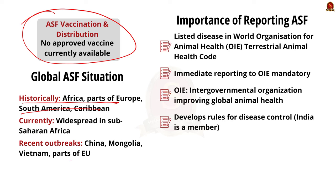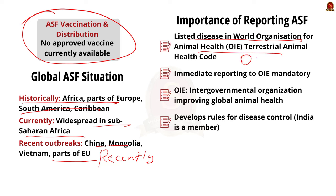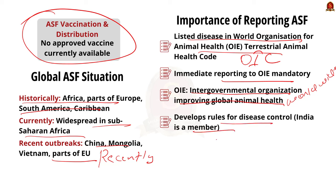African swine flu is found in countries around the world, particularly in sub-Saharan Africa. More recently, it has spread through China, Mongolia, and Vietnam as well as within parts of the European Union. African swine flu is listed in the World Organization for Animal Health's Terrestrial Animal Health Code, and if found, it must be reported immediately. The World Organization for Animal Health is an intergovernmental organization responsible for improving animal health worldwide. India is a member of the World Organization for Animal Health.